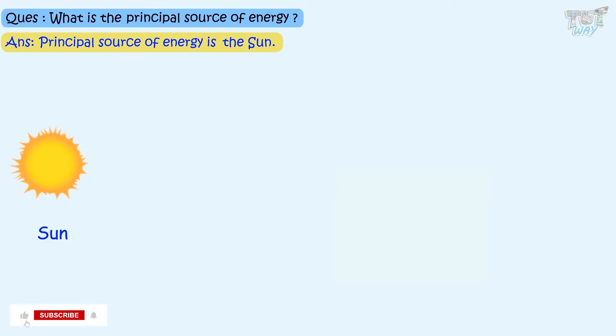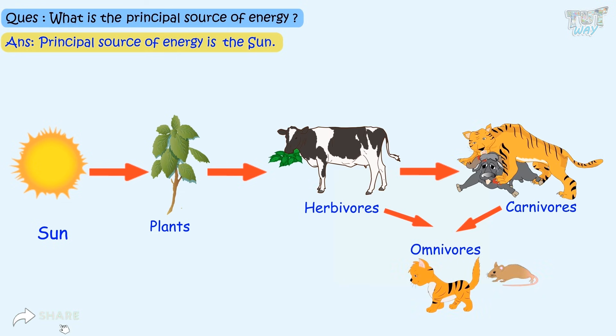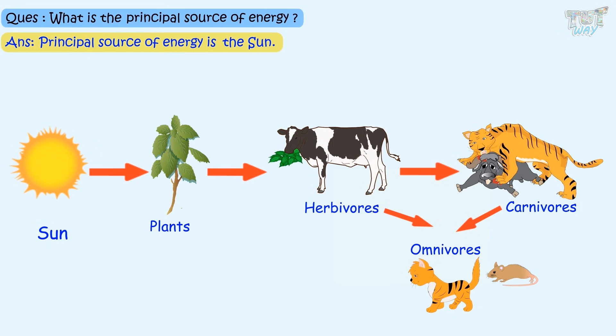Kids, do you know what the principal source of energy is? The principal source of energy is the sun. All the different sources of energy that we learned about derive their energy directly or indirectly from the sun. So the sun is the principal source of energy for all sources of energy, and we will learn more about how in our next grades.